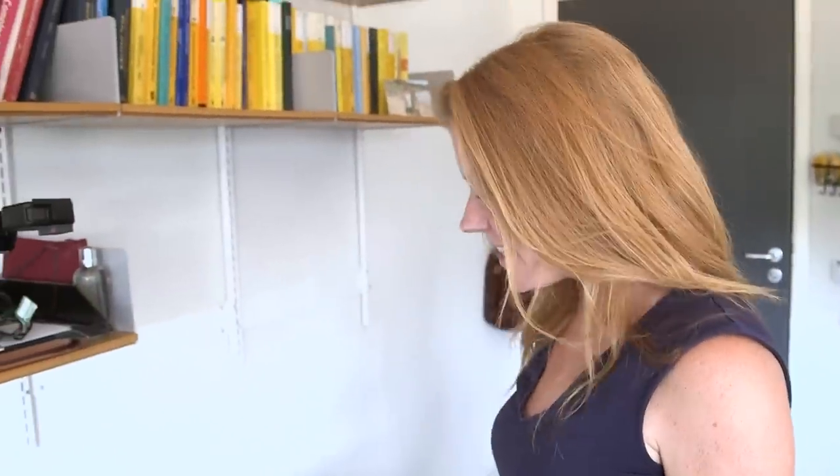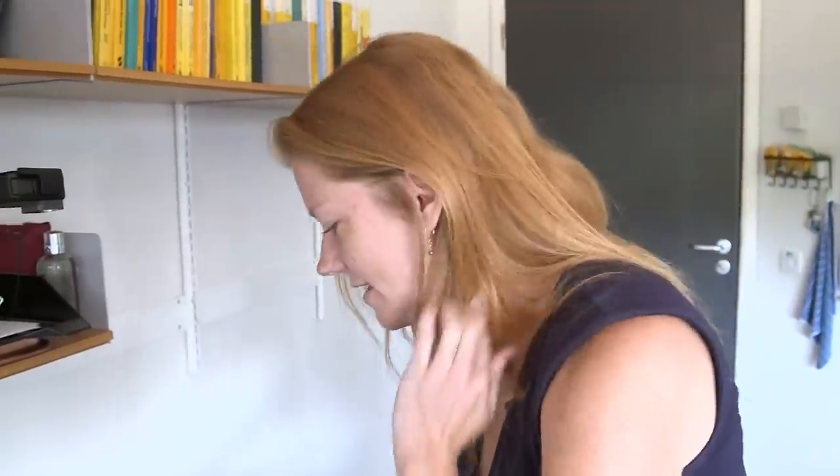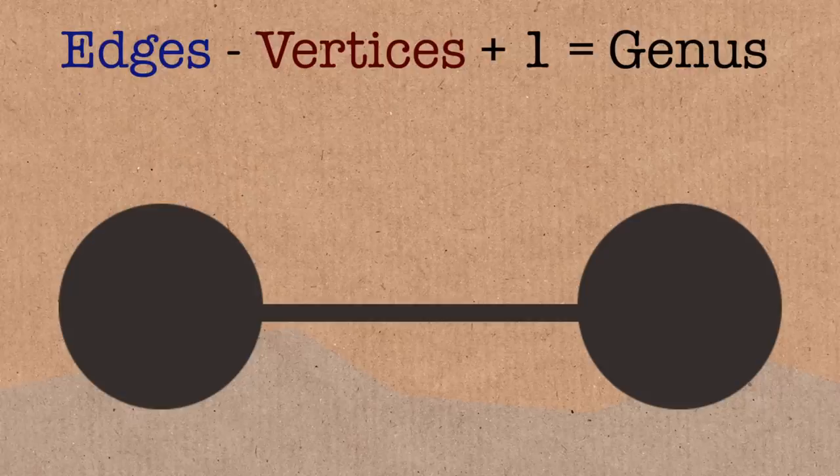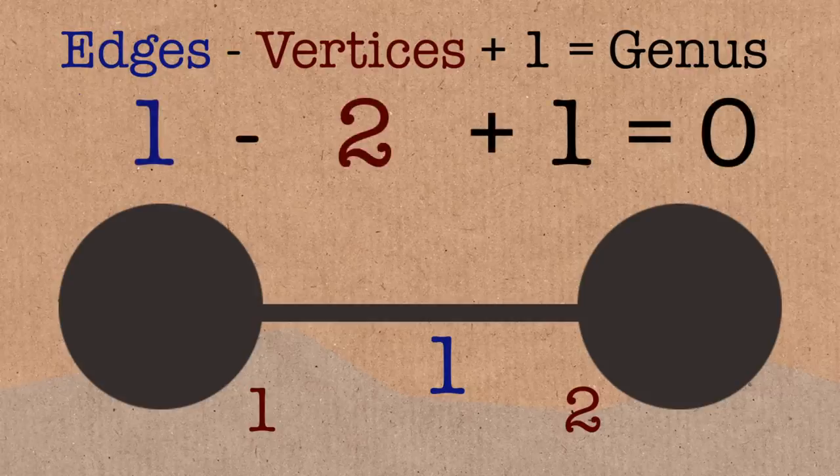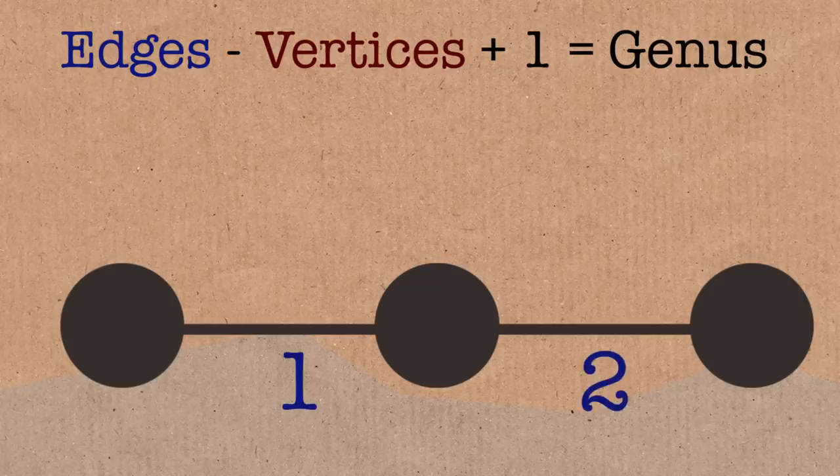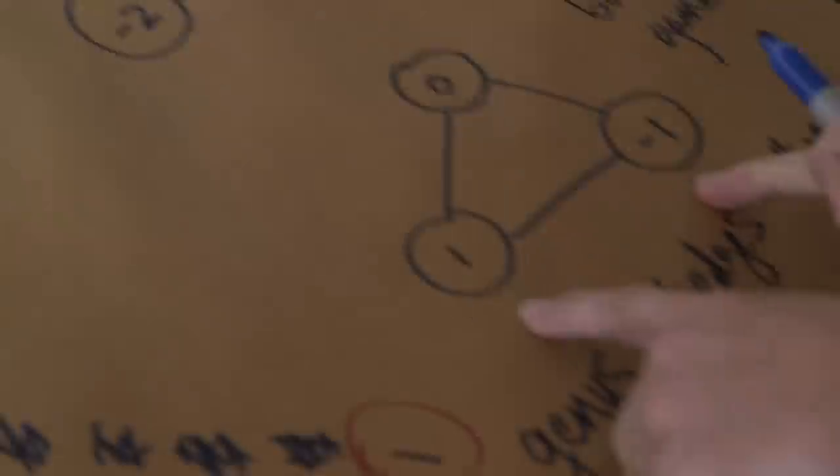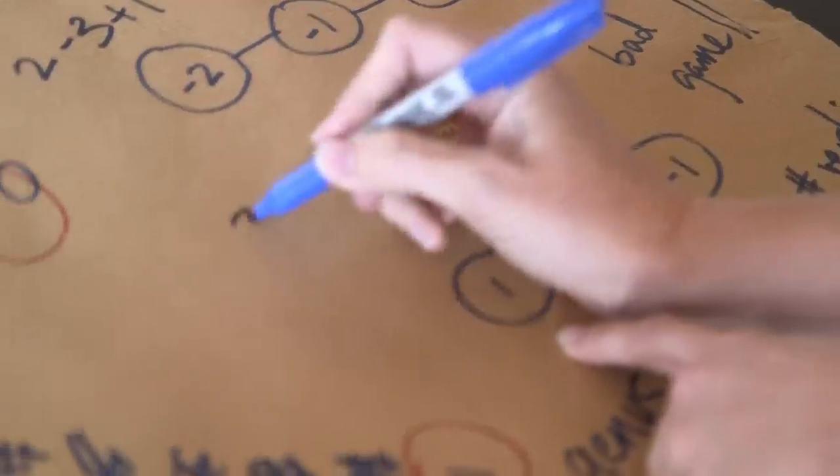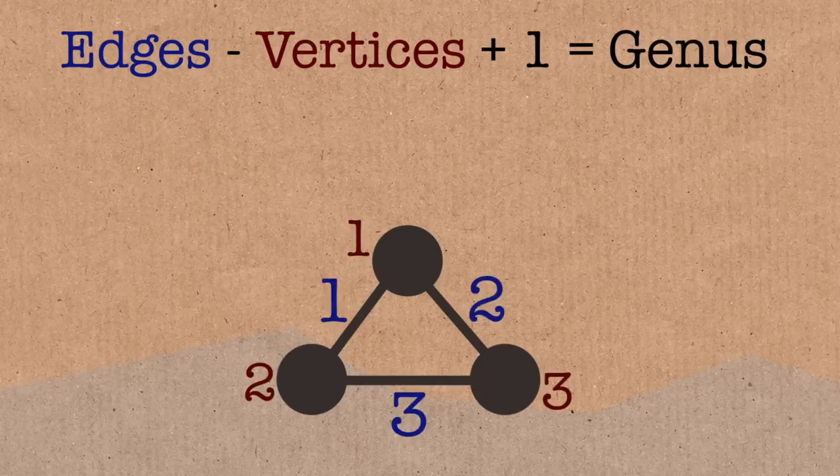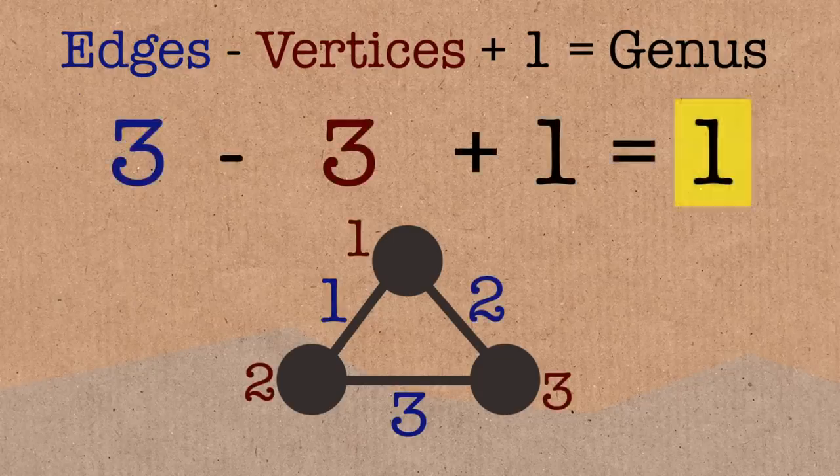So let's check what the genus is in each of these cases. So in this case, the genus is, let's see, we've got one edge, and we've got two vertices, and we add one, so the genus is zero. In this case, we've got two edges, three vertices, and we add one, and again we get zero. In this case, we've got three edges, three vertices, plus one, so the genus is one.